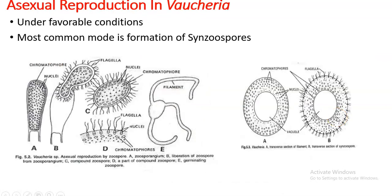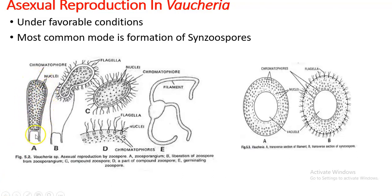Asexual reproduction occurs during favorable circumstances, as in other algae during spring and summer season. The most common form is the formation of synzoospores. During reproductive maturity, the thallus which is going to bear the zoospore will accumulate protoplasm at the apical side of the filament. There will be a dense amount of nuclei and chromatophores at that apical region.